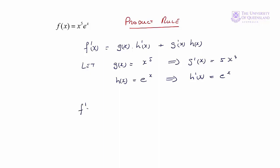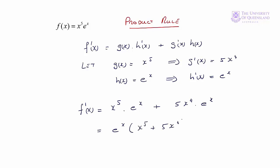Then f'(x) = g(x)·h'(x) + g'(x)·h(x) = x^5·e^x + 5x^4·e^x. We can factorise that as e^x·(x^5 + 5x^4).